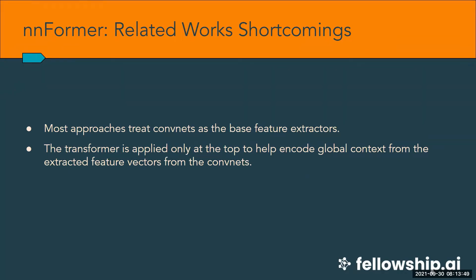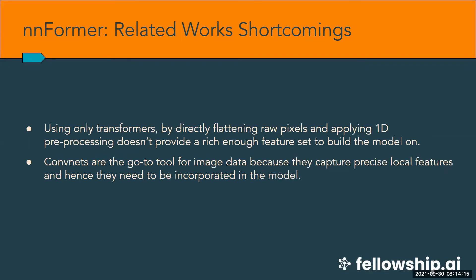Most approaches feed convnets as just feature extractors to generate a feature map and then overlay transformers to encode global context. Compared to convnets, transformers relax the inductive bias of locality, capturing dependencies over long sequences and making them more capable of dealing with non-local interactions — hence they ought to be used alongside convolutional nets. Furthermore, directly flattening raw pixels and applying 1D pre-processing doesn't provide a rich enough feature set. This is where Informer comes in, with an interleaved combination of convnets and self-attention.